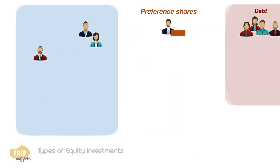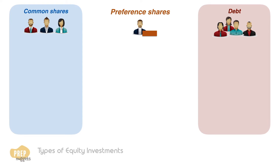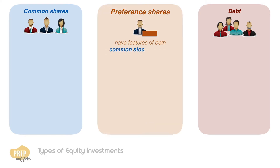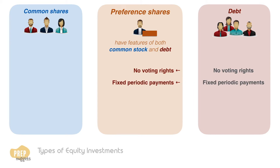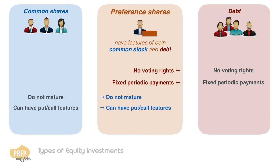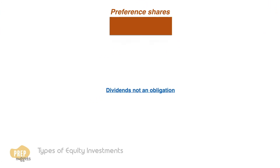Now let's turn our focus to preference shares. In a way, preference shares have features of both common stock and debt. Like debt, preferred shares do not have voting rights and typically make fixed periodic payments to investors. Like common stock, the shares usually do not mature, can have put or call features, and dividends are not a contractual obligation.